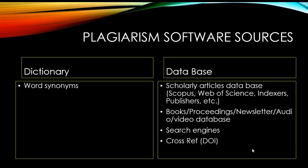First, about plagiarism software — the algorithm reads all the synonyms of a particular word. You may have seen in a dictionary that when you type a single word, it provides all the similar words. The second thing is about the database: all research articles, books, proceedings, newsletters, audio, video, and website references are included.